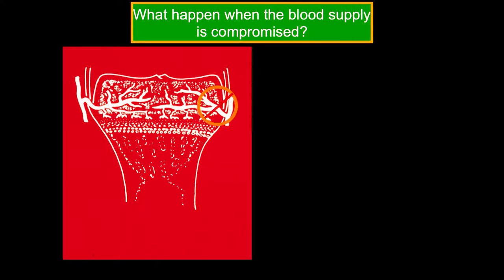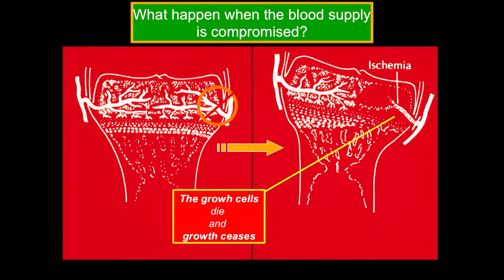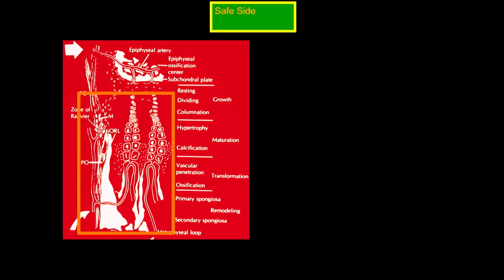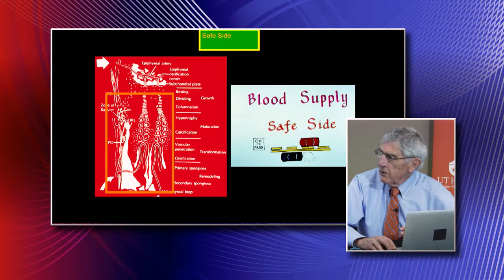The blood supply goes through the epiphysis to the resting cells—that's how the cells get their nourishment. That's the dangerous side. When doing repair, you want to avoid devascularizing it. If you lose the blood supply, the cells become ischemic and die, and you've stopped the growth.